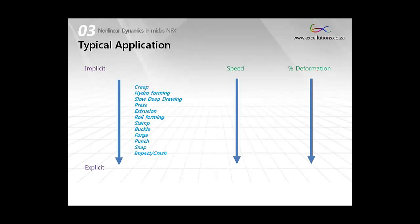Here is a list that I will leave open for debate. From my point of view, real slow events like creep, hydroforming, slow deep drawing events will probably fall more to the liking of the implicit method. And as we move through press events, extrusions, roll forming, stamping, buckling, forging, punching, snaps and impact and crash, we will move more to the domain of the explicit analysis.